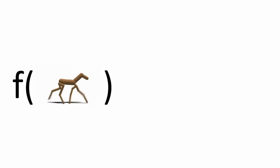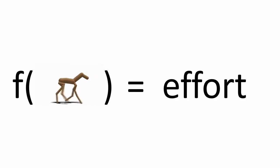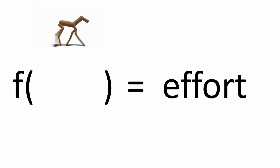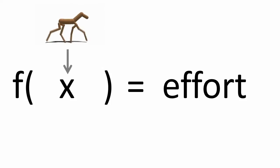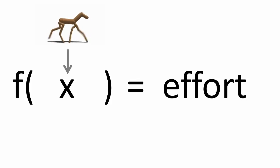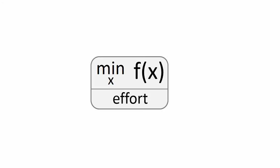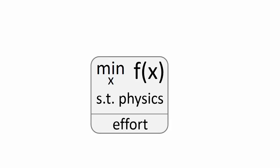This approach starts by defining a function that takes a motion as input and computes something roughly analogous to the amount of effort the animal would have to exert to perform that motion — I'll denote a motion with the variable x. Different motions require different amounts of effort, so to synthesize a motion we take the biomechanical assumption that the animal probably won't waste too much energy, and we search for the motion which allows it to walk using a minimal amount of effort. This is also subject to the constraint that the motion must obey the laws of physics — I'll leave this constraint implicit but ever-present for the remainder of the talk.